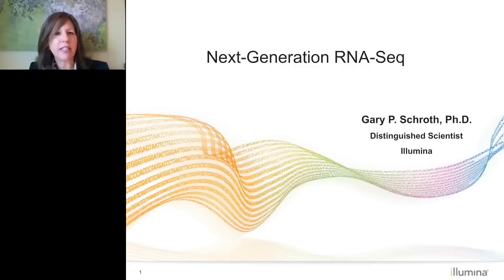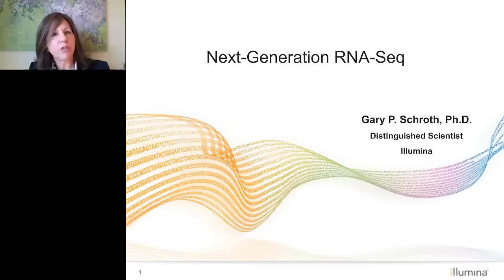I would now like to introduce today's speaker, Gary Schroth, PhD. Dr. Schroth is currently a distinguished scientist at Illumina where he directs the Genomic Applications Group based in San Diego. He obtained his PhD in Biochemistry from the University of California at Davis and has been working in the field of Next Generation Sequencing, NGS, for 10 years as part of Illumina and Solexa. Dr. Schroth uses NGS to study gene structure, expression, and regulation, applying this to genomic projects in cancer, microbiology, and infectious disease. He has published 90 peer-reviewed research papers and holds 17 U.S. patents. I will now turn it over to Dr. Schroth for his presentation.